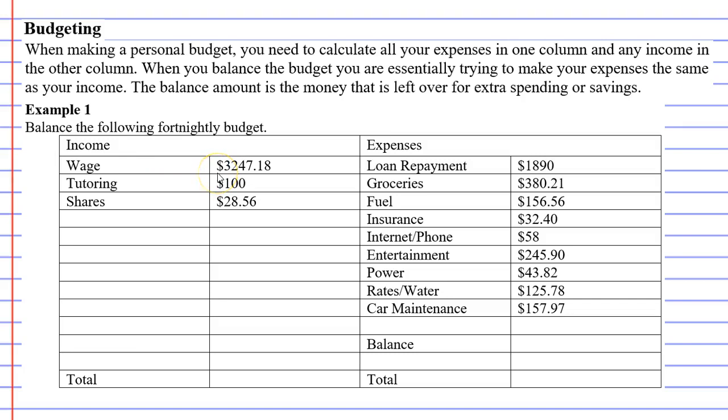What we'll do is add up each column. I'm going to get you to do it — I'm going to pause and come back with the amounts. Okay, that took me a little while to work out, but I found the two amounts.